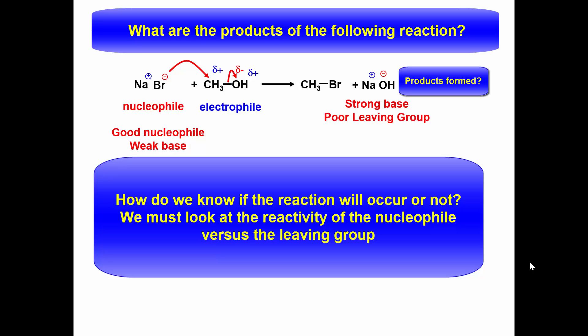The leaving group is a hydroxide ion, is a very strong base, and also a good nucleophile. This reaction would not proceed to products. Just like acid-base reactions, the reaction will favor the more stable, less reactive species. The hydroxide ion is a much stronger base than the bromide ion.